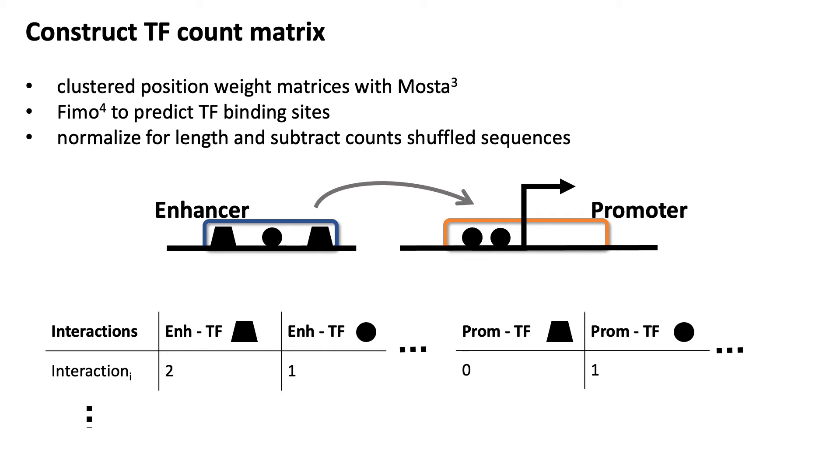So if you have an interaction, you would say these transcription factors are bound on the enhancer and the promoter, and this interaction would be one row in the matrix. So first you have all the transcription factors bound in the enhancer region, and then the same transcription factors, but now the counts for the promoter region.